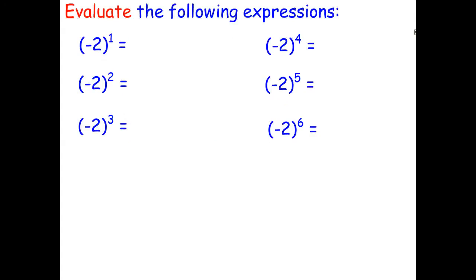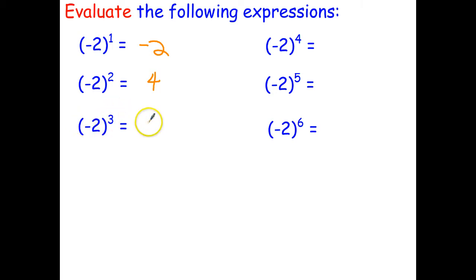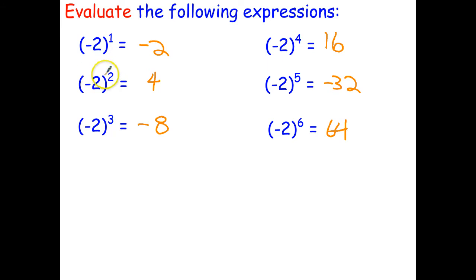I'd like you to have a go at evaluating these expressions. Stop the video and restart once you've finished. Negative 2 to the power of 1 — any number to the power of 1 is just itself. Negative times a negative is a positive, so that's positive 4. As we learned earlier, raising a negative number to an odd power gives a negative result — so that becomes negative 8, positive 16, negative 32, positive 64, and so on. If the power is even, the answer is positive; if the power is odd, the answer is negative.